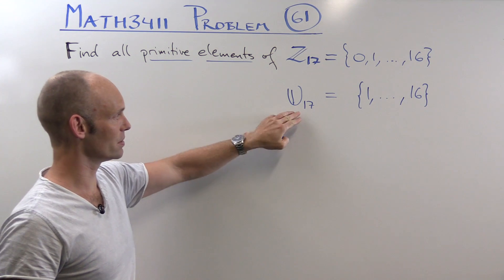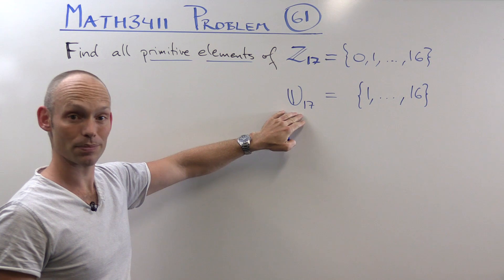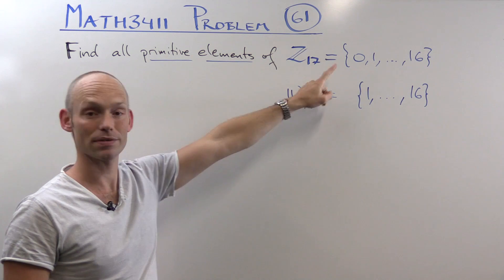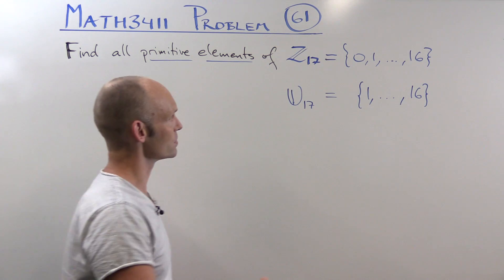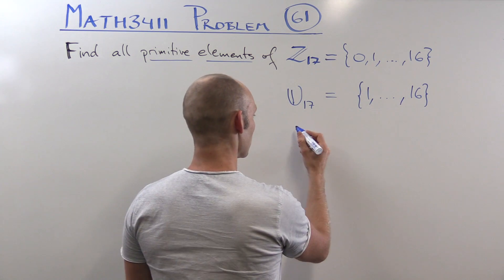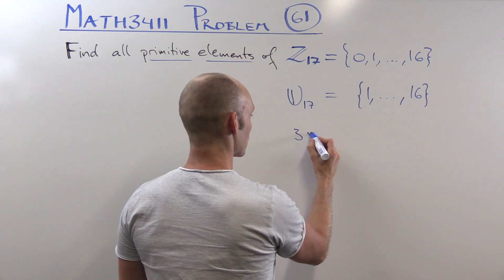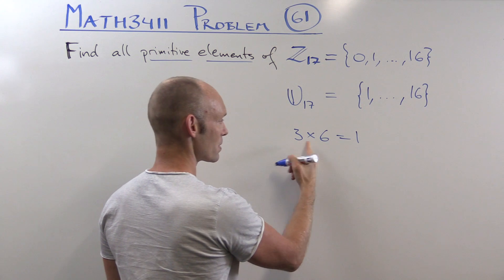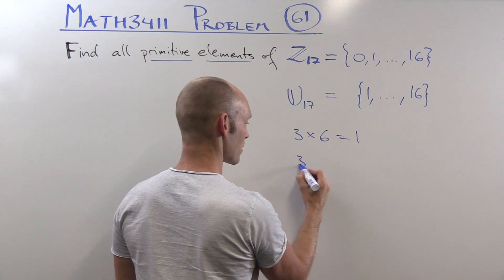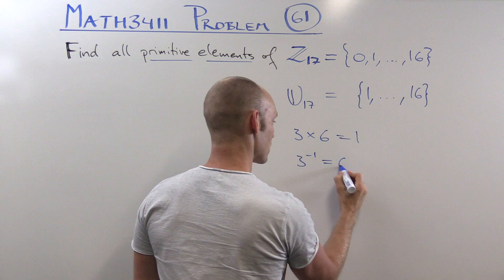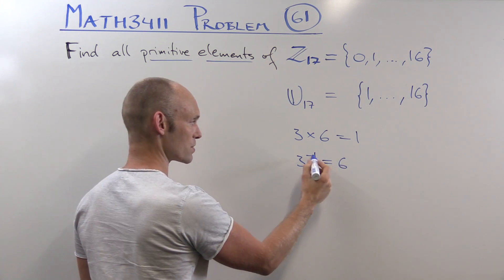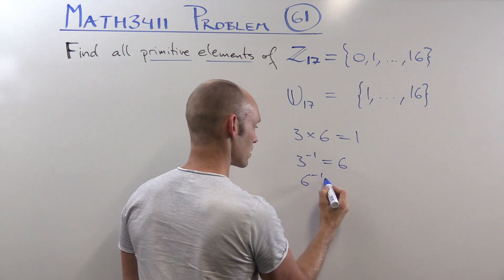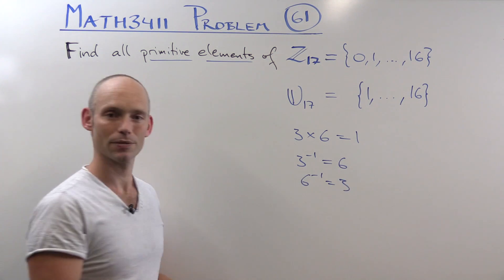The units are the numbers we can divide by. This is a field because we can divide by everything except for 0. For instance, if we have 3 and multiply it by 6, then we get 1. So 3 and 6 are each other's inverses — the inverse of 3 is 6, and the inverse of 6 is 3.